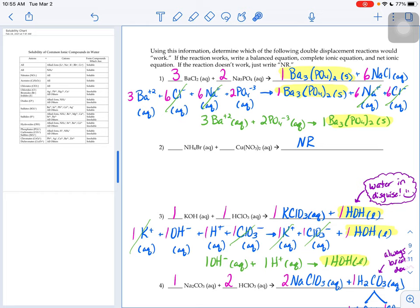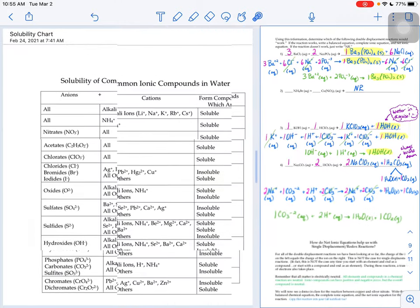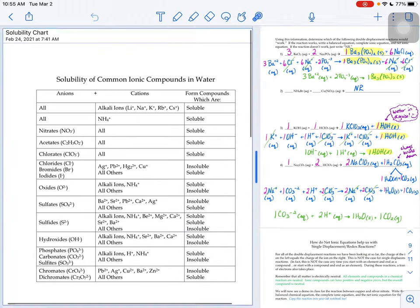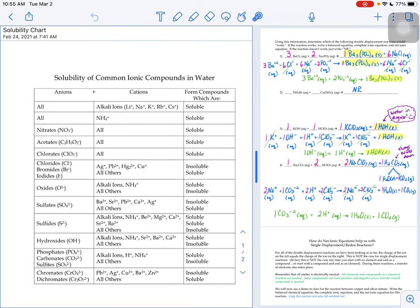So we go to our solubility chart and check the states of matter on ammonium nitrate and copper 2 bromide. Ammonium nitrate—anything with nitrate is going to be soluble. So our ammonium nitrate's state of matter would be aqueous.